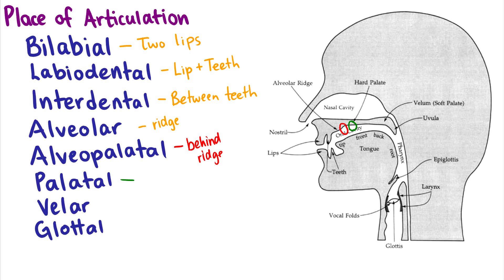Velar is where your velum is, so I will circle this one in purple. So this is where you make sounds like K as in king, or G as in go.